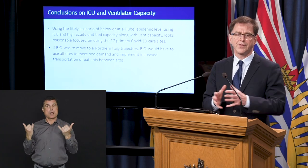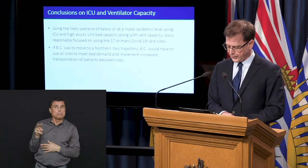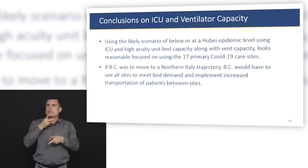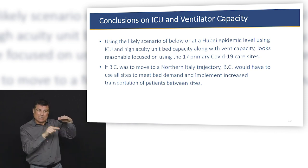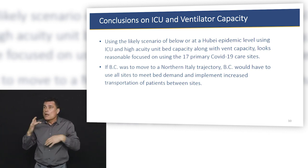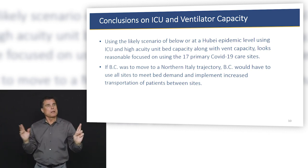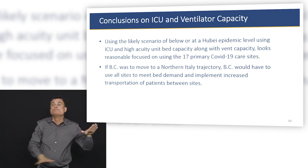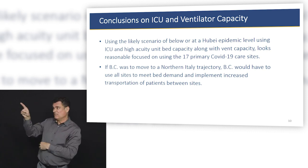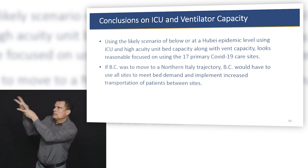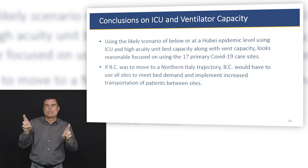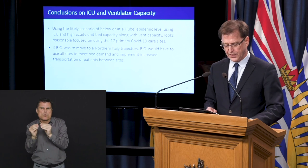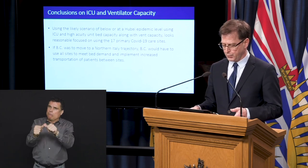Our conclusions: using the likely scenario of below or at a Hubei epidemic level, using ICU and high acuity unit bed capacity along with ventilator capacity, we are reasonably focused on being able to handle that within the 17 prime COVID-19 care sites. If we were to move to a Northern Italy trajectory, BC would have to use all sites to meet bed demand and implement increased transportation of patients between sites. The more detailed discussion of that can be found in the longer briefing.